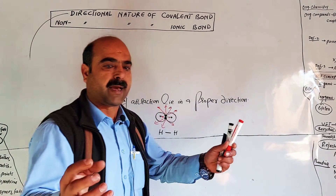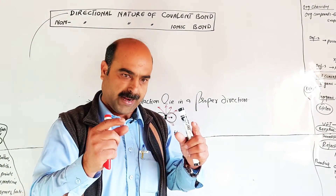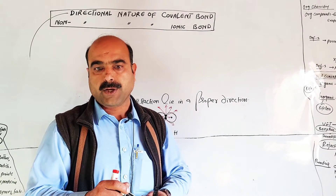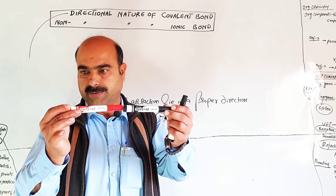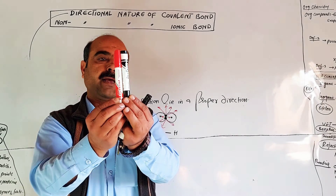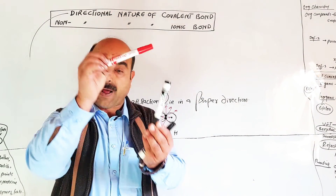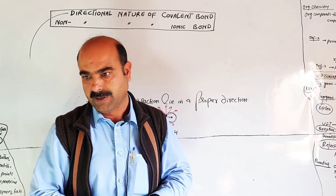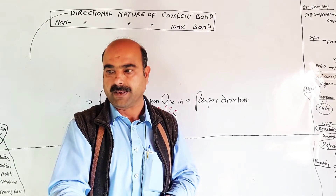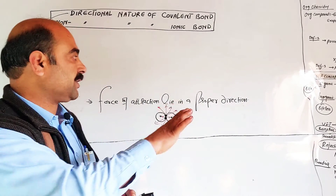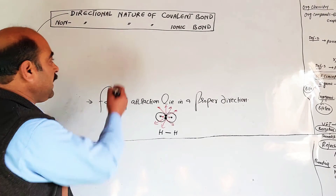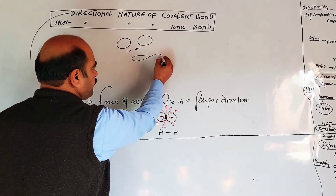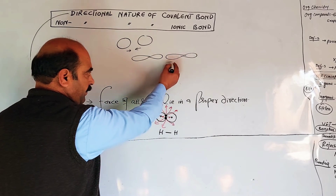In the modern concept, covalent bonds are formed by the overlapping of atomic orbitals. When orbitals like px-px, py-py, or pz-pz overlap, they do so along a proper direction and orientation, forming sigma and pi bonds. This gives covalent molecules proper geometrical shapes such as linear, trigonal, tetrahedral, square planar, or trigonal bipyramidal.